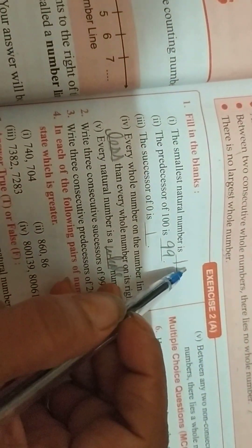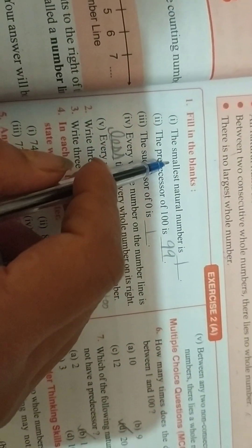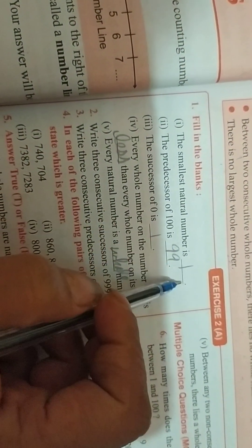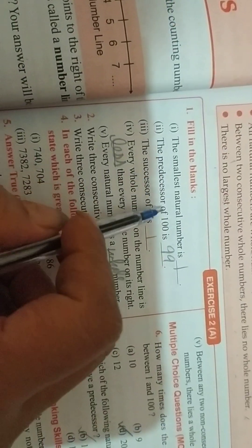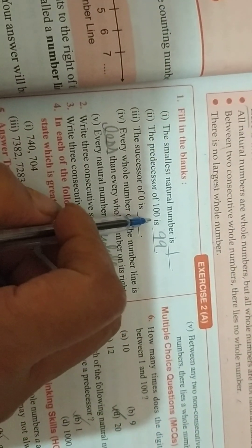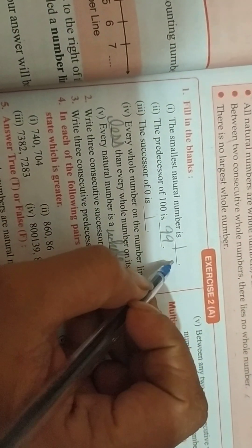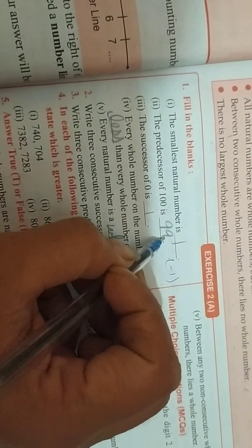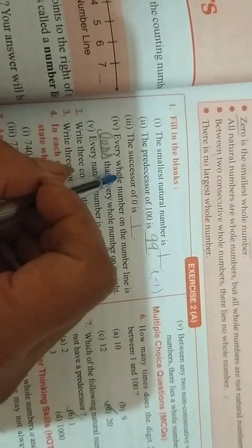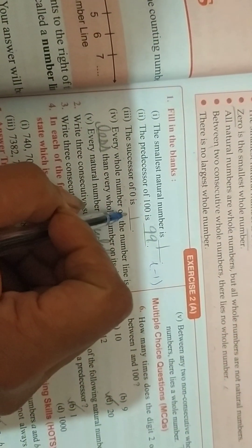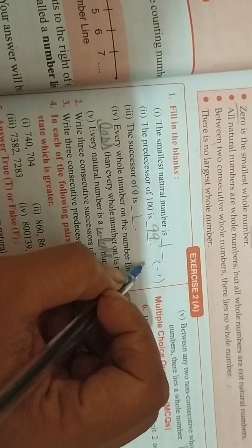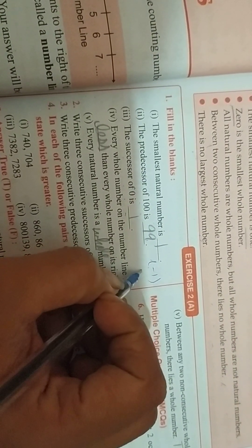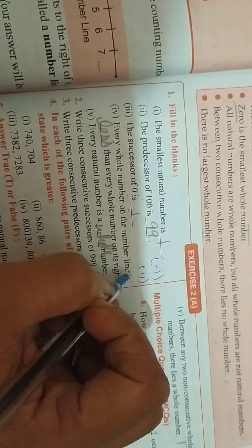Now see some examples. The smallest natural number is 1. The predecessor of 100. As I told in my previous video, predecessor means minus 1. So 100 minus 1 is 99. The successor of 0 is 1, or you can say successor means plus 1.